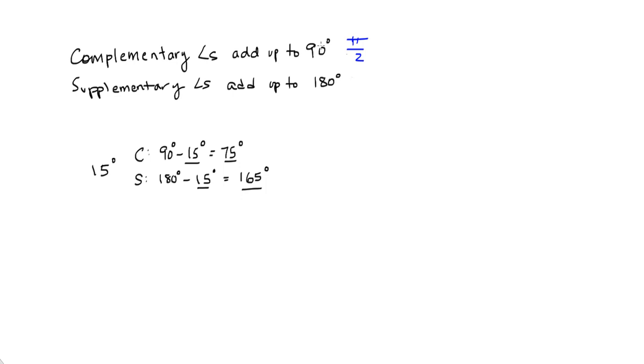So complementary angles add up to pi over 2, and supplementary angles add up to 180 degrees, which is pi radians.